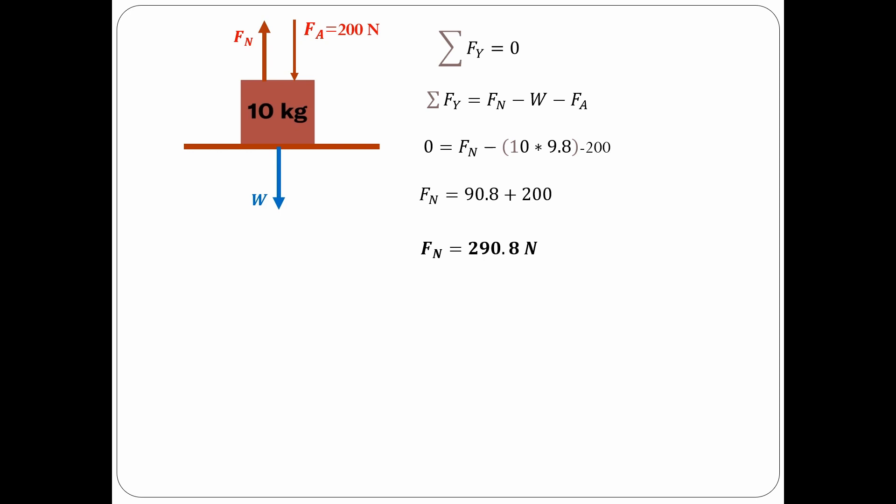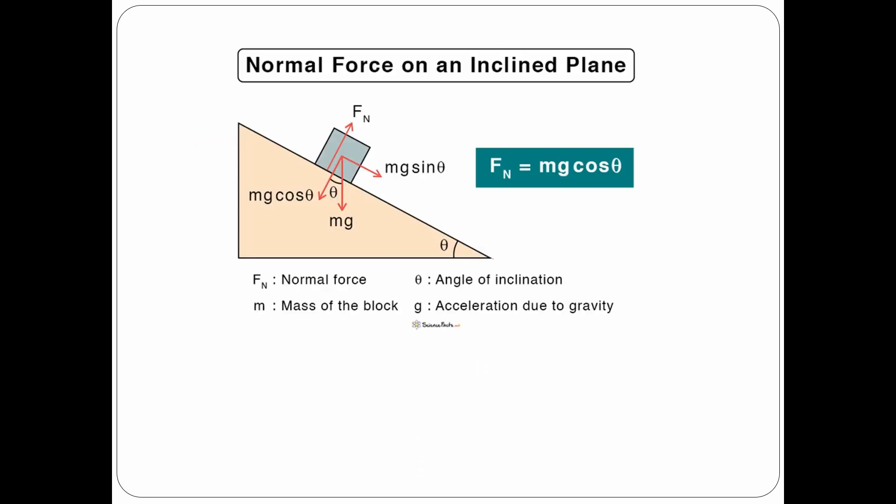So whenever you apply an additional downward force on the box, the normal force will be increased. In the same manner, when you apply a tension force of 50 newtons, the normal force will be decreased to 40.8 newtons. Now let's talk about the normal force in an inclined plane.